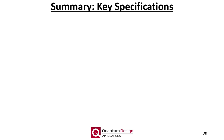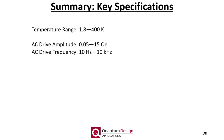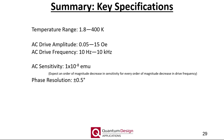Let's summarize some of the key specifications for the ACMS2. The ACMS2 works over the entire temperature range of the specific base system — for the Dynacool, this is 1.8 to 400 Kelvin. Note there is no oven capability for the ACMS2 as there is for the VSM option, because the ACMS2 coil set cannot function properly in high vacuum, a requirement for the oven option. The AC drive amplitude can vary between 0.05 and 15 Oe, with a frequency spanning 10 to 10,000 Hz. The sensitivity is about 1 × 10⁻⁸ EMU at 10,000 Hz, with an order of magnitude decrease in sensitivity for every order of magnitude decrease in drive frequency. The phase resolution is ±0.5 degrees, and DC moment measurement sensitivity is on the order of 5 micro EMU.